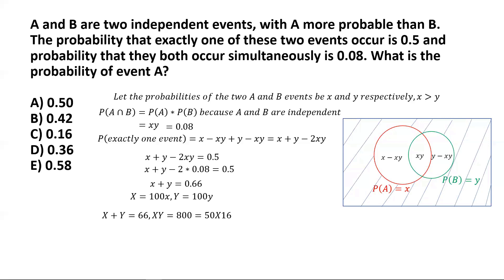We can write 800 simply as 50 multiplied by 16. From this, it's easy to see that the values of X and Y will be 50 and 16, because 50 plus 16 equals 66. So this gives us an easy way of identifying the solution.